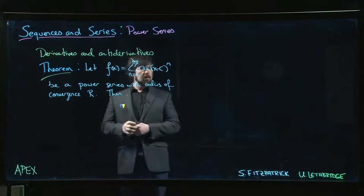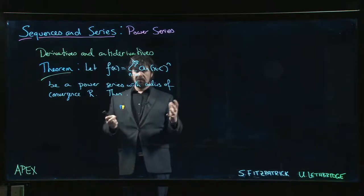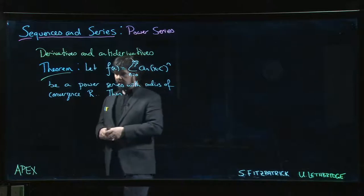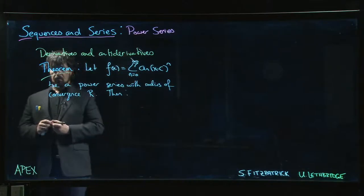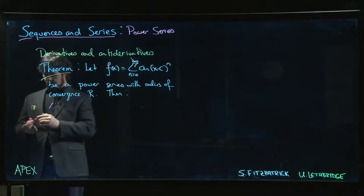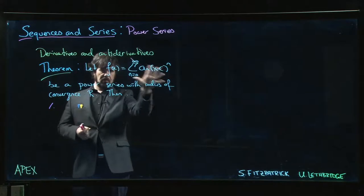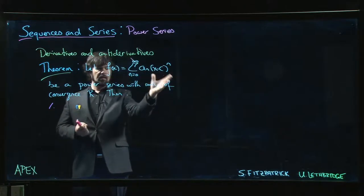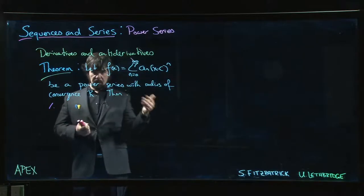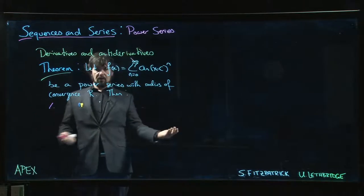All right, so in the last video we looked at radius and interval of convergence. Next thing we want to look at is derivatives and antiderivatives. So this theorem comes in three parts. In all of these we're defining a function as a power series. The point is that x in a power series is variable. Finding the interval of convergence gives us the domain for the function.